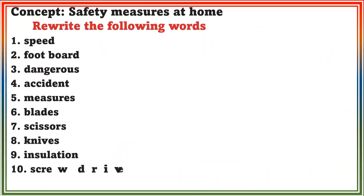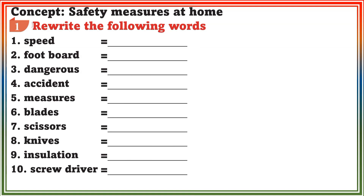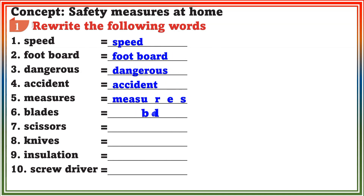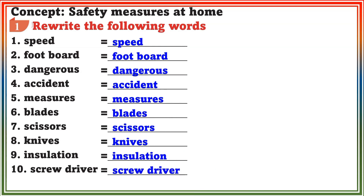Worksheet 2. Concept: Safety Measures at Home. Section 1: Rewrite the following words — Speed, Footboard, Dangerous, Accident, Measures, Blades, Scissors, Knives, Insulation, Screwdriver.